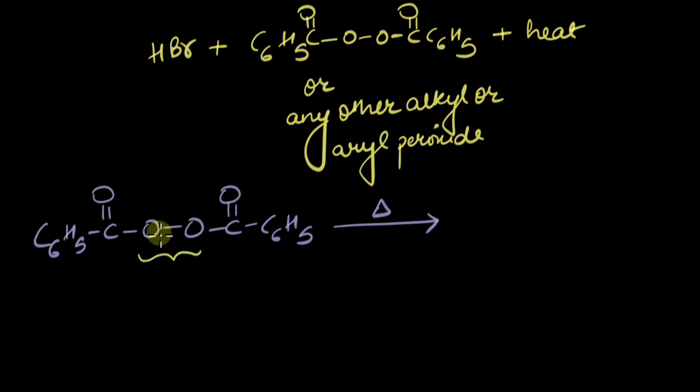The bond has an oxygen atom on either side. So there is no electronegativity difference. So this bond cleaves homolytically and both the oxygen atoms get one electron each. This results in the formation of free radicals.